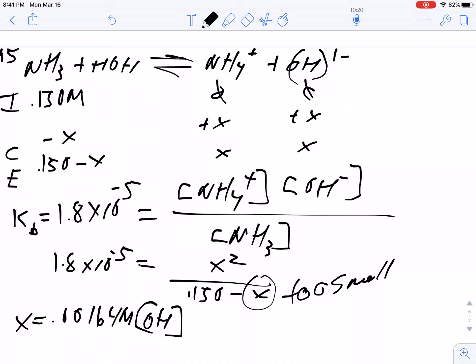Then I'm going to plug it in and find the pOH by doing the negative log of the concentration of OH-. The pOH is 2.78, which means the pH must be 11.2, which is good because by adding a base to water it should be basic.